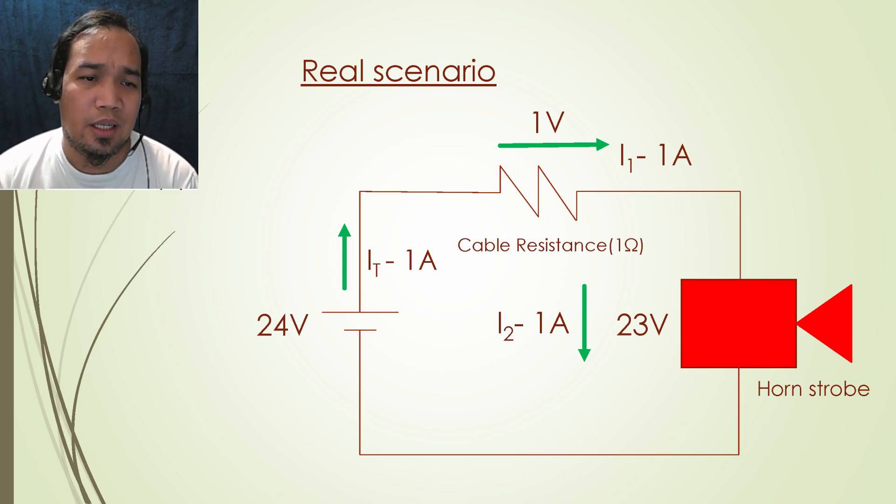But in real scenario, as shown in the illustration, some of the current is consumed by the conductor internal resistance which results in voltage drop. You will notice that only 23 volts is now received by the fire alarm horn strobe from the voltage source because of one volt voltage drop from the cable internal resistance.